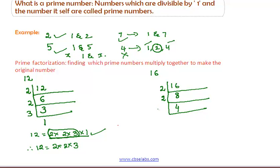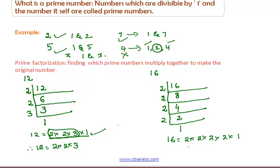Here, 2 can also divide the number 4, so put 2 in this place. Now, we have to divide the number 2. That is, starting from this 1 to this 1. Here, 1 is left since 1 is not a prime number. Therefore, we can write the prime factorization of 16 as 2 into 2 into 2 into 2. I hope that you understood.